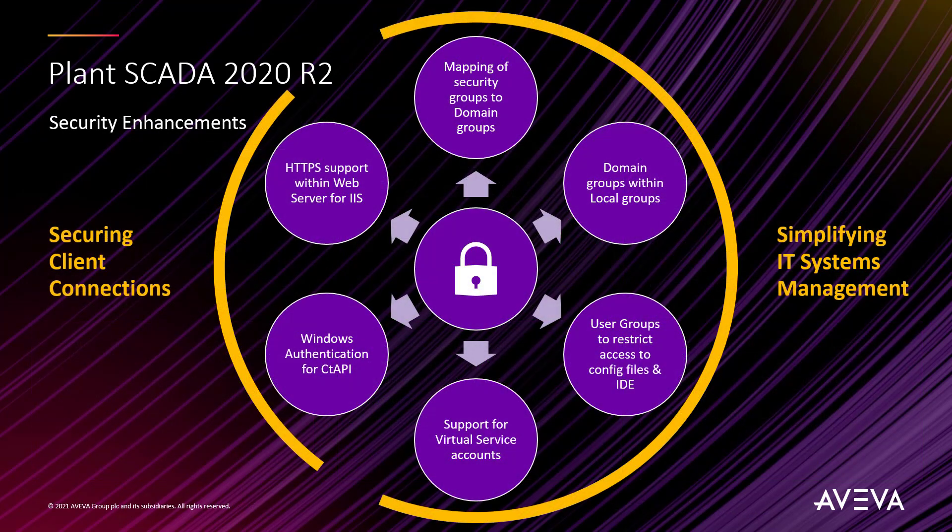Looking across the security improvements briefly, these fall into one of two main categories. The first is simplifying how Plant Skater fits and is implemented within your customers' business networks and an overall business environment, making their job easier. And second is enhancing our internal security between different Plant Skater components and our interfaces.